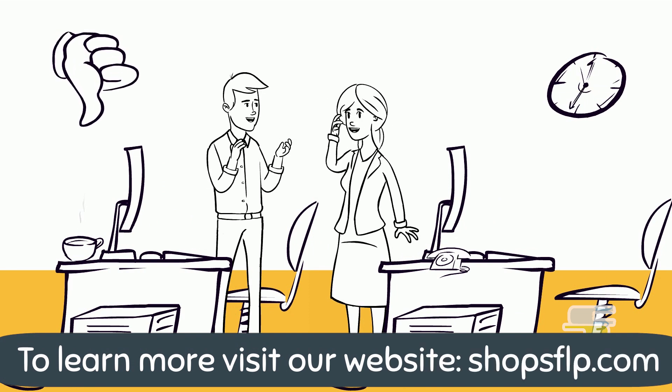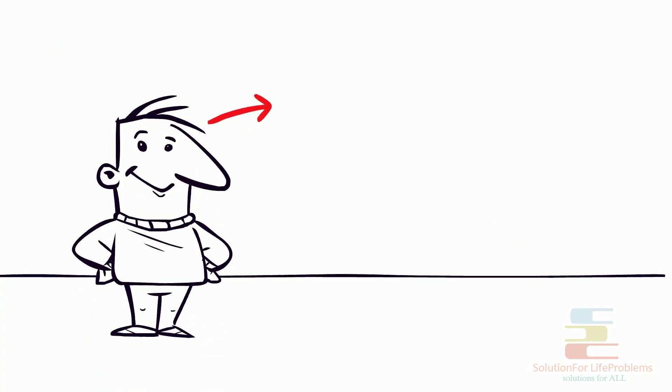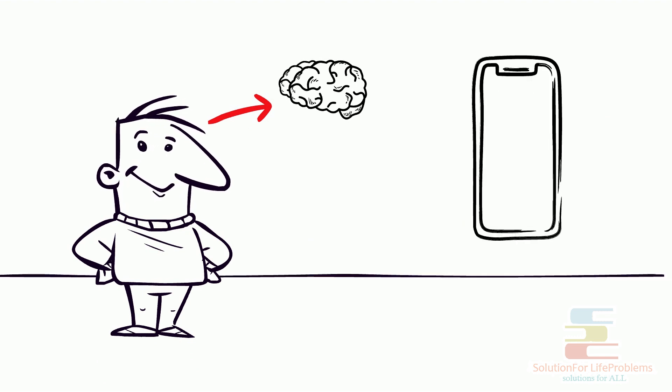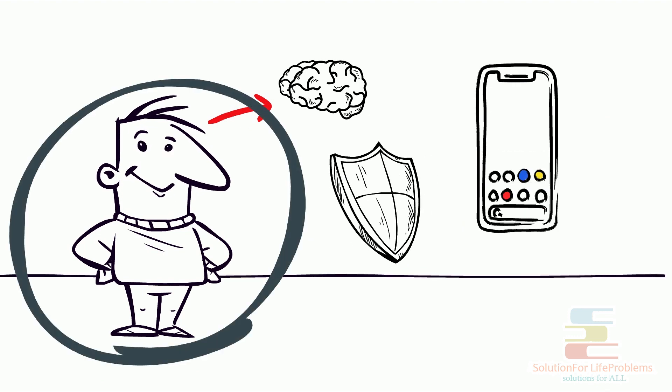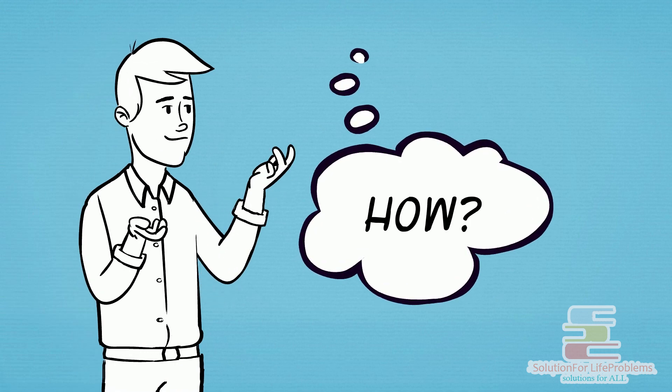So this path is not for everyone. Now the other way to change the environment is inside us. You can change the environment inside you to such an extent that even if there are millions of distractions outside, they will not have any effect on you. Now the question that comes here is how to do this?